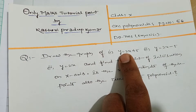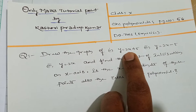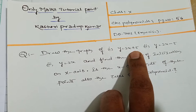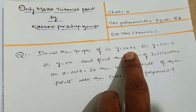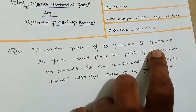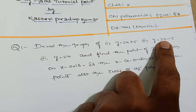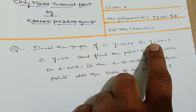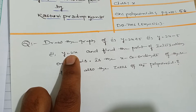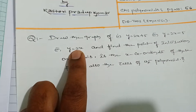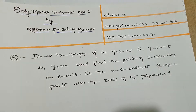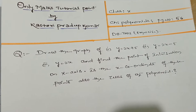The given polynomial is y = 2x + 5, which is in the form of y = mx + c — the equation of a straight line. Similarly, y = 2x − 5 and y = 2x are also in the form y = mx + c, which is the equation of a straight line.